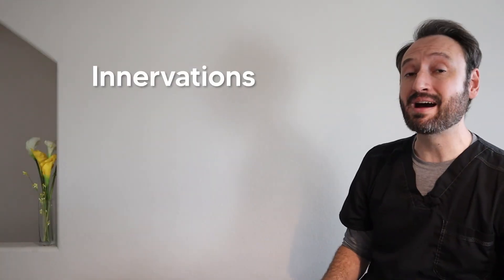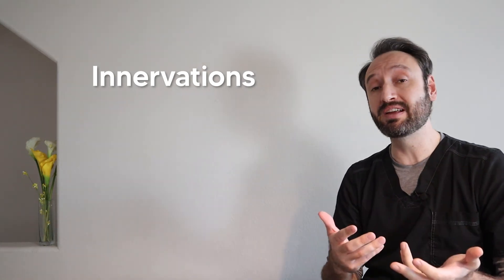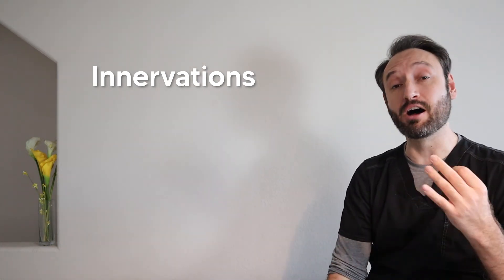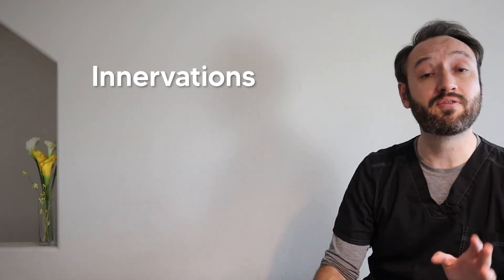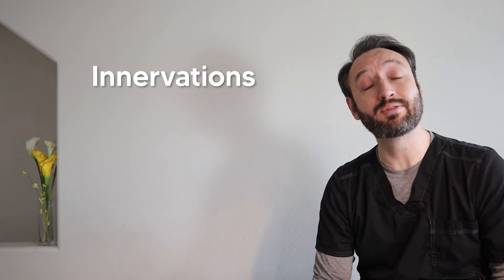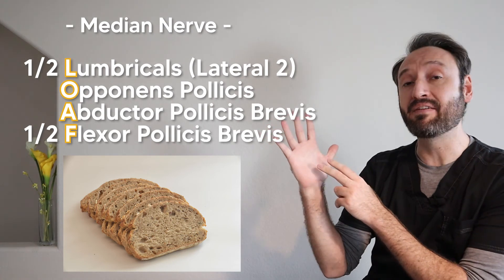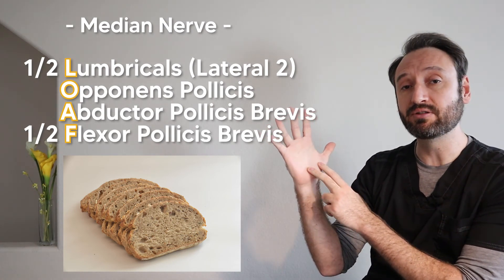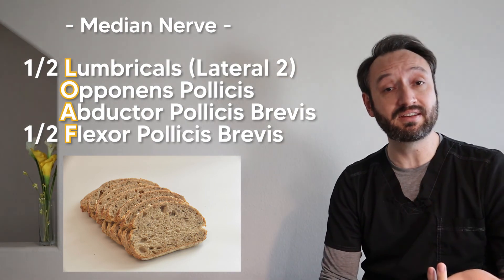All right, so let's close things out with one quick mnemonic to remember the innervations. So the vast majority of muscles in the hand are innervated by the ulnar nerve. So this is basically ulnar territory, but there are four muscles that are innervated by the median nerve and the easy way to remember that is with the mnemonic half loaf half. So the half L there stands for half of the lumbricals. So the lateral two lumbricals are all median nerve. Then we have the opponens pollicis, the abductor pollicis brevis,